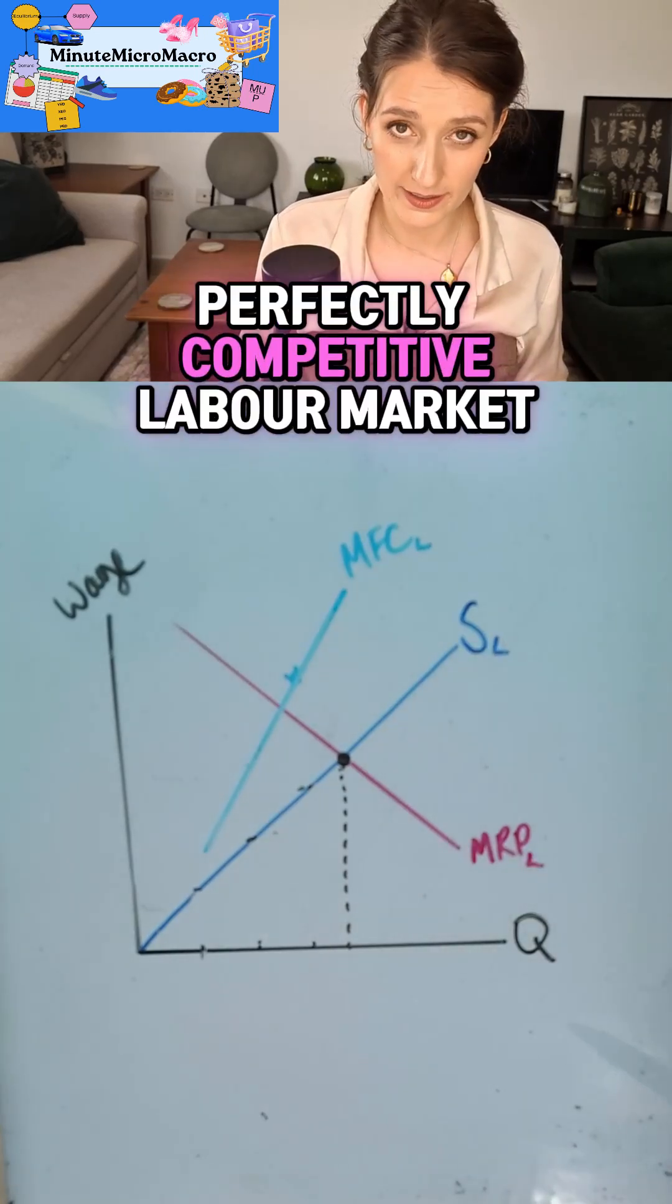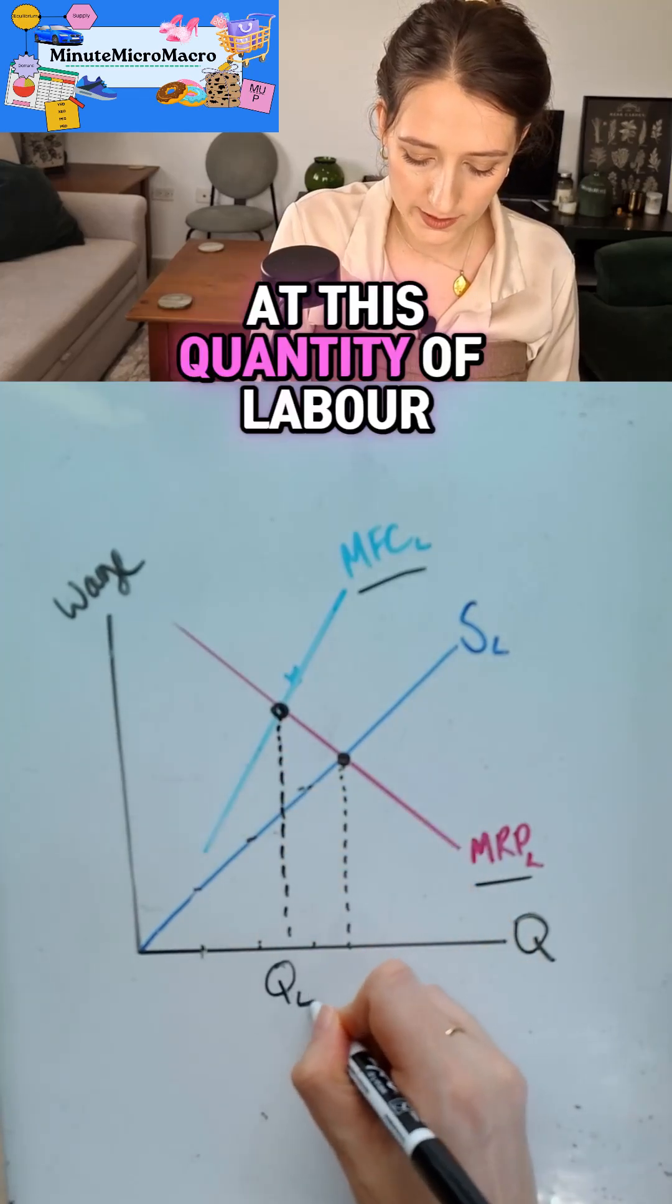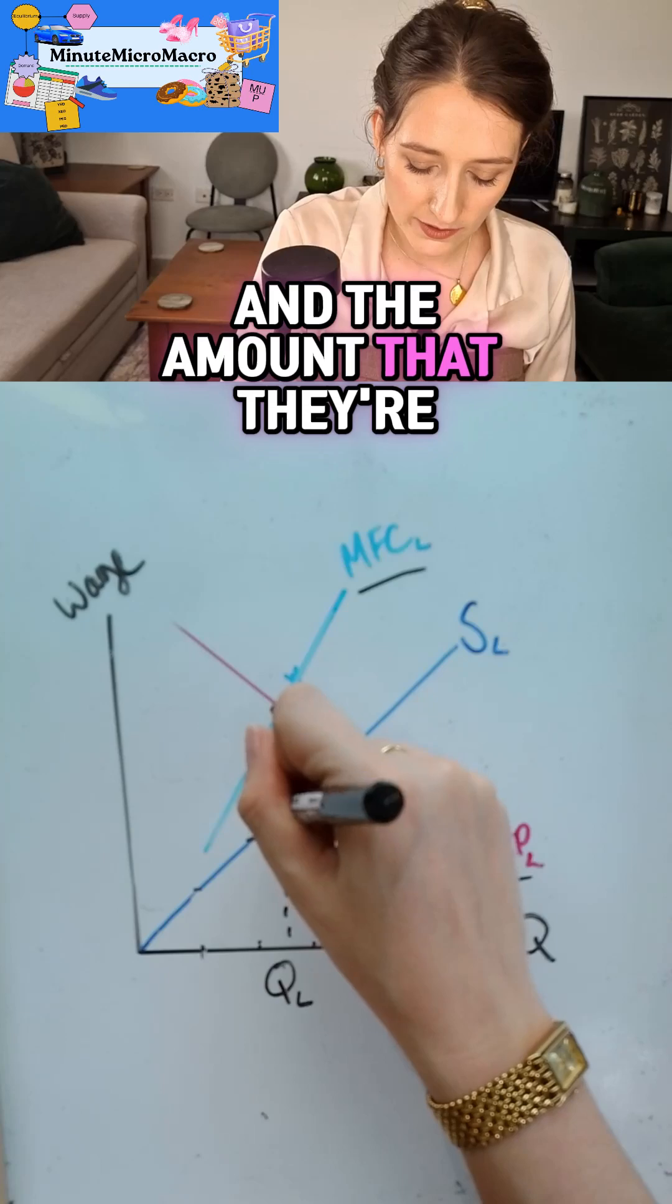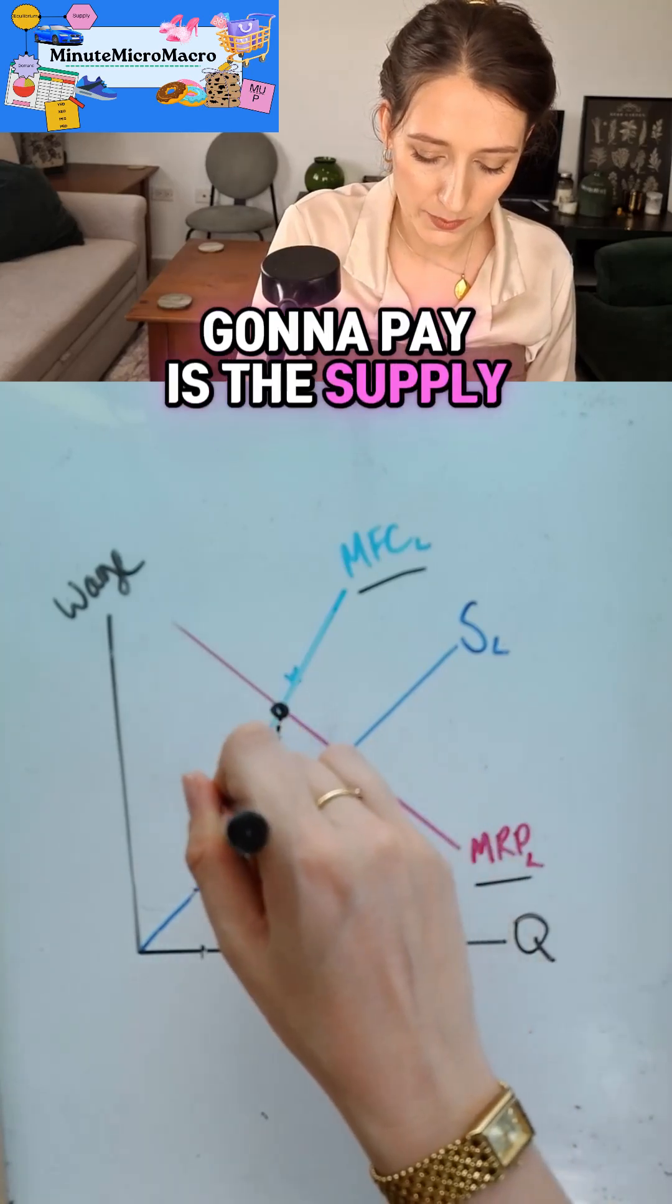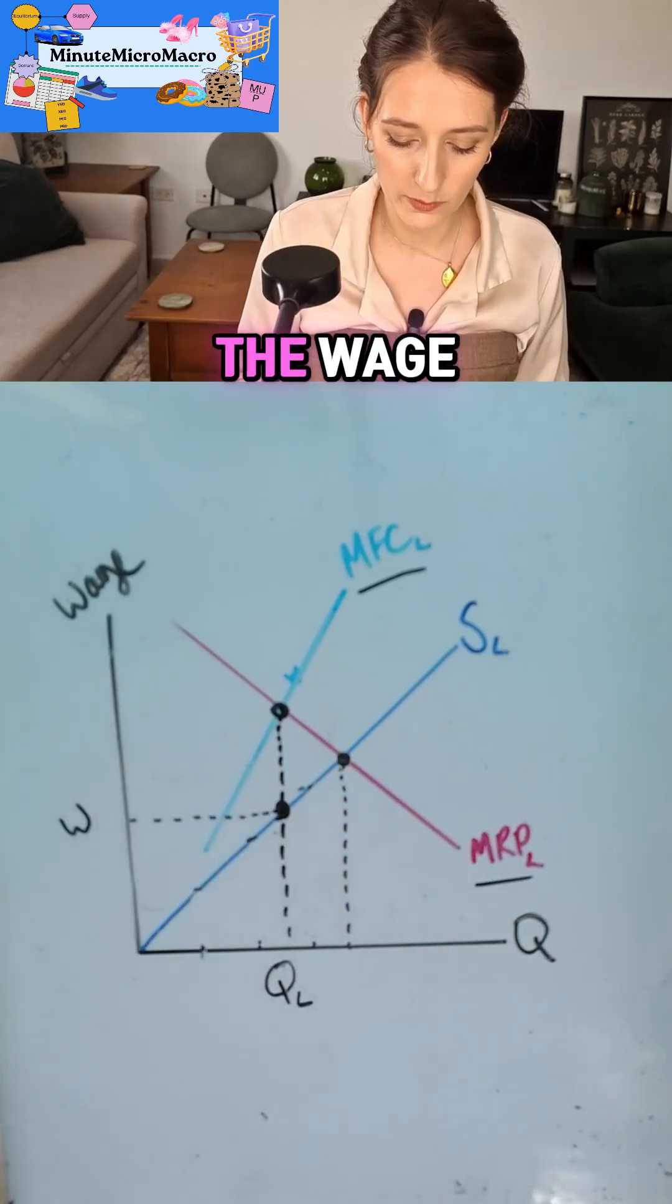However, we're not in a perfectly competitive labor market. We're in a monopsony. So they're going to produce this quantity of labor. And the amount that they're going to pay is the supply of labor to get that many workers. So this is going to be the wage.